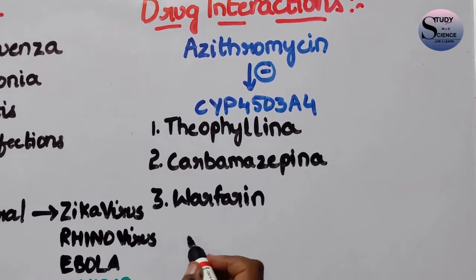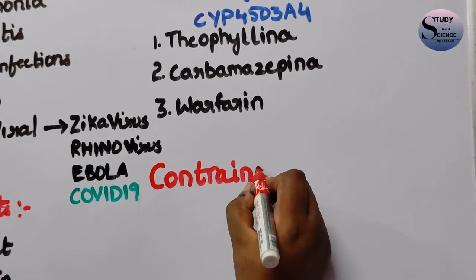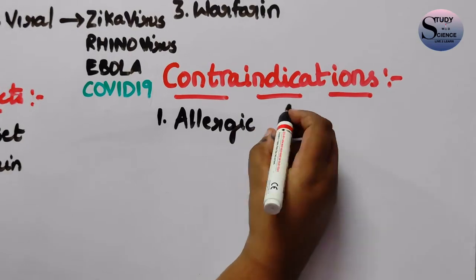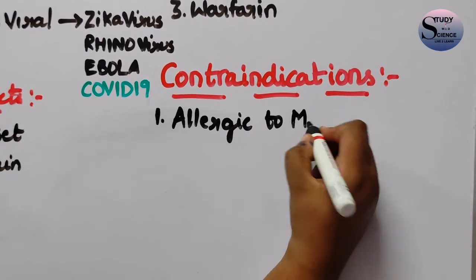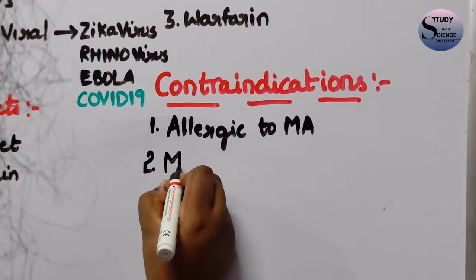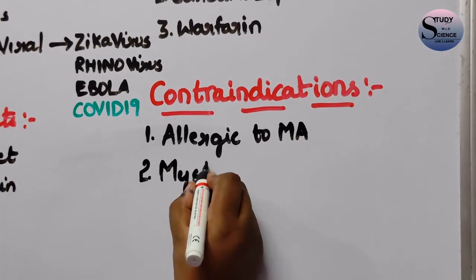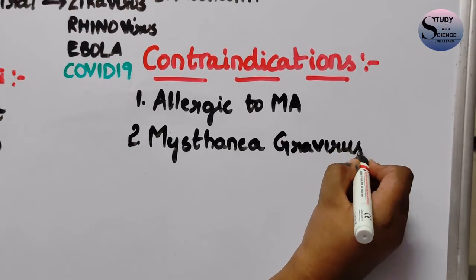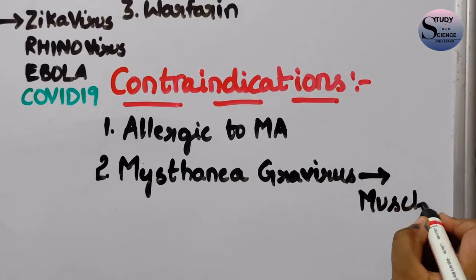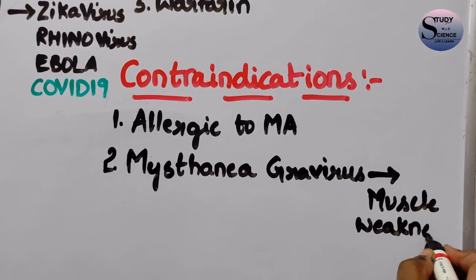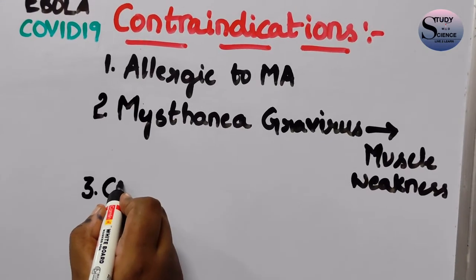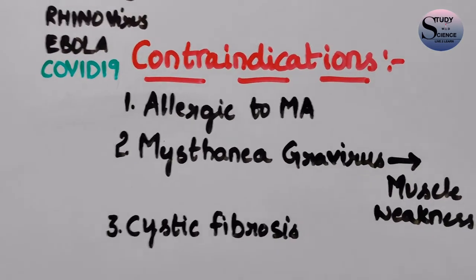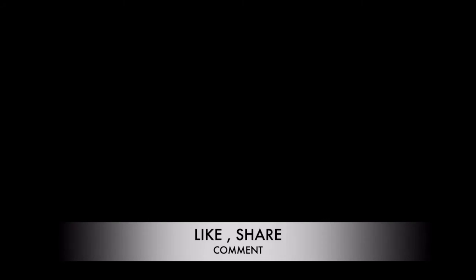Regarding contraindications, this drug should not be given to people who are allergic to macrolide antibiotics, or to people suffering from myasthenia gravis — as it causes and enhances muscle weakness in those patients. This drug should also not be given to people suffering from cystic fibrosis. This is all about the drug Azithromycin. I hope you got it.